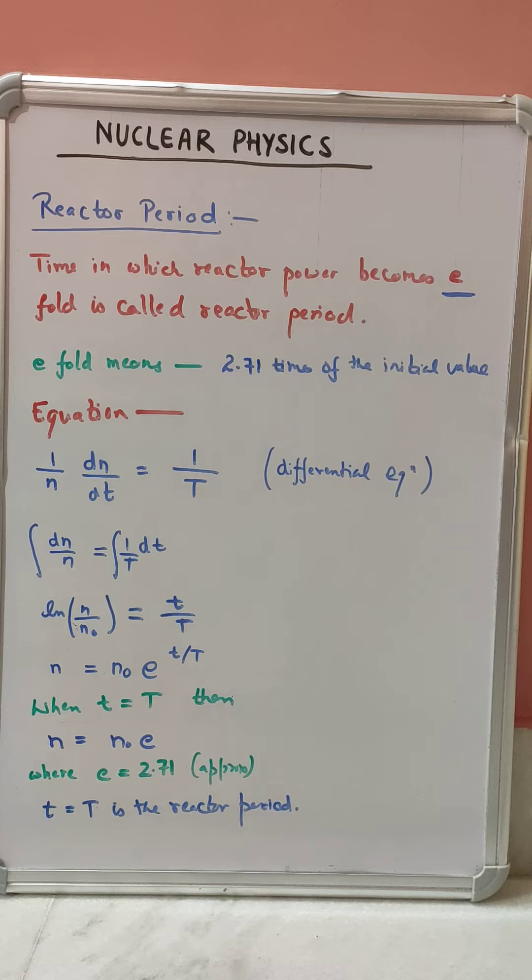Reactor period can be defined as a time in which the reactor power becomes e-fold of the initial value. This is called the reactor period. Where e-fold means 2.71 times of the initial value of the reactor power.